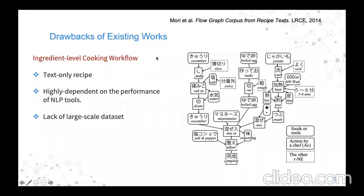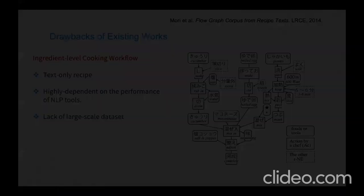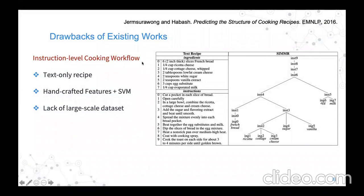Currently there are very few related works on building cooking workflows, and I will introduce two. The first builds an ingredient-level cooking workflow, where each node is an ingredient or an action. But building such a fine-grained workflow is very hard because it is highly dependent on NLP tools such as named entity recognition and dependency parsing. Another work tries to build an instruction-level cooking workflow — the same objective as ours — using handcrafted features and SVM to detect whether two cooking steps are in parallel or sequential.